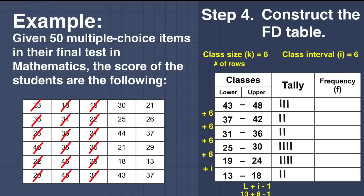Then 31 — add 1 to 31 to 36. Then add 1 to 25 to 30, so we have 5 for that class. Then 25 — additional 1, so we already have 6 for class 25 to 30. Next, 44 is included in 43 to 48, so we have 4 already. Next is 21, under 19 to 24, so we already have 5. Then 18 — included in 13 to 18, so we have 3. Then 43 — included in 43 to 48, so we have 5. Then 21 again — included in 19 to 24, so we have 6. Then 26 — included in 25 to 30, add 1, making 7.